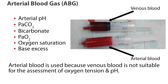The arterial blood gas, or ABG, provides valuable information about the acid-base balance of the blood and the oxygenation status of the blood. It measures the arterial pH, PaCO2, bicarbonate, PaO2, oxygen saturation, and base excess.